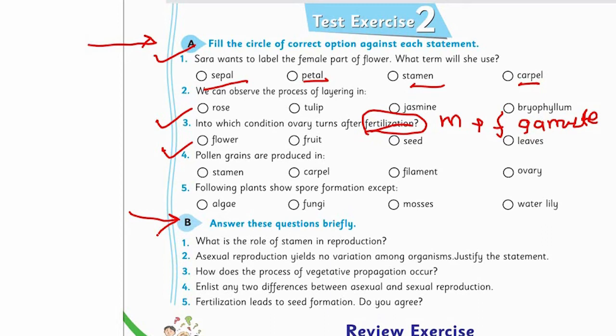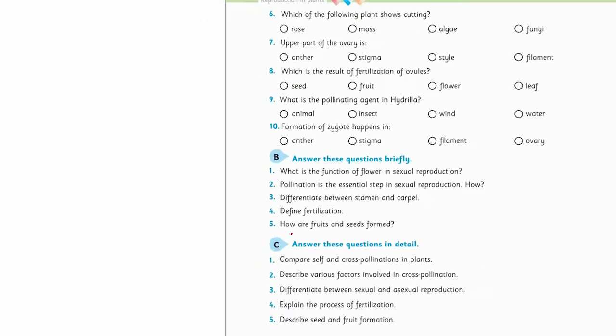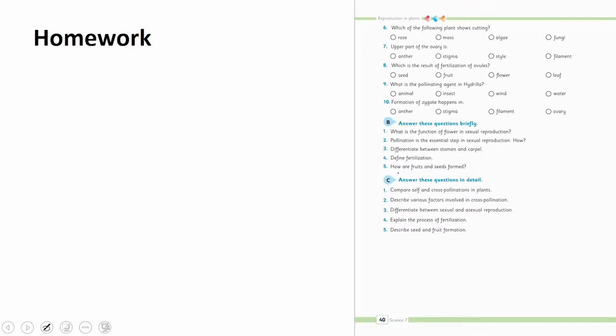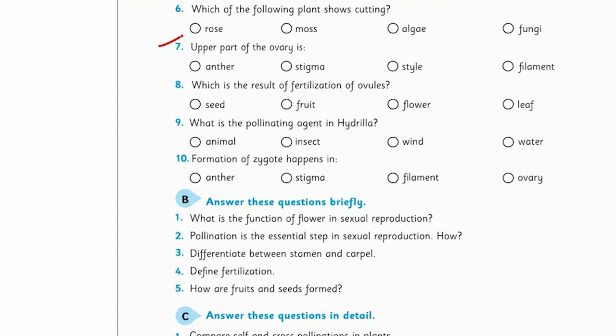From Part B, you will solve question number 5: Fertilization leads to seed formation — do you agree? Whether you agree or not, you have to give strong reasons. Then comes the Review Exercise. From this section, you will solve question number 7: The upper part of the ovary is anther, stigma, style, or filament — fill the circle of the correct option.